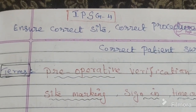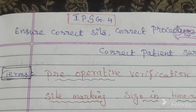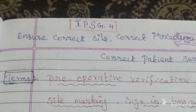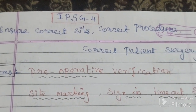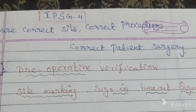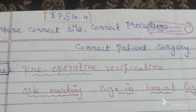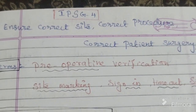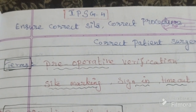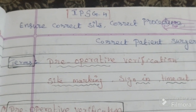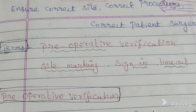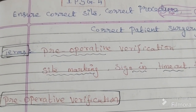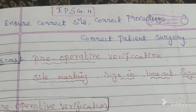In this video, continuation of international patient safety goals. The first one is identify patient correctly, second one is improve effective communication, third one is improve the safety of high-alert medication. These three are completed.